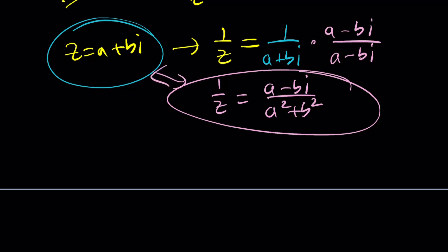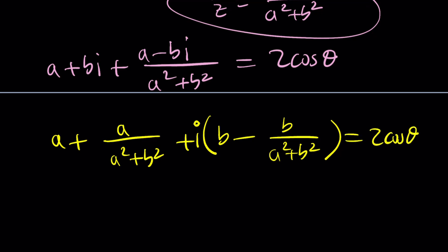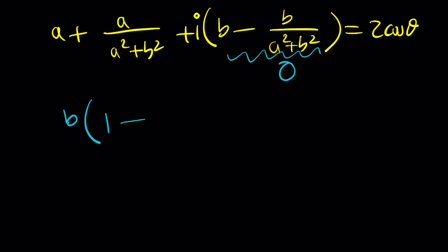Now we're going to put an imaginary part. Let's separate these: a plus a over a squared plus b squared plus b minus b over a squared plus b squared. All of that is multiplied by i. And this equals two cosine theta. But there is no i on the right hand side. So the coefficient of i, which is the imaginary part, must be zero.